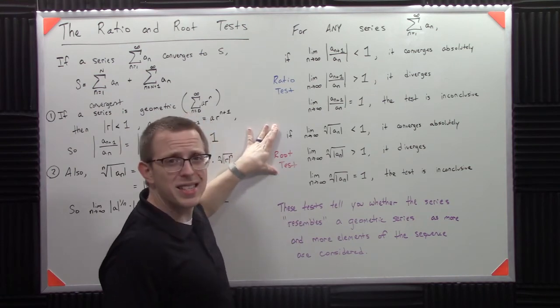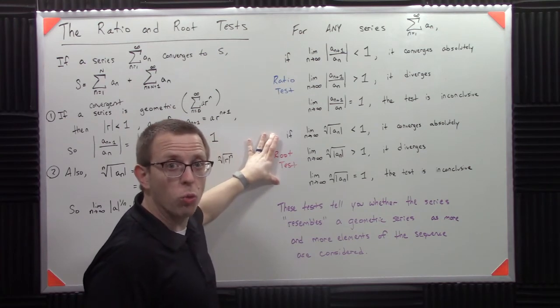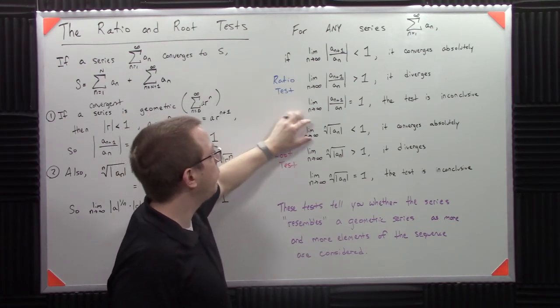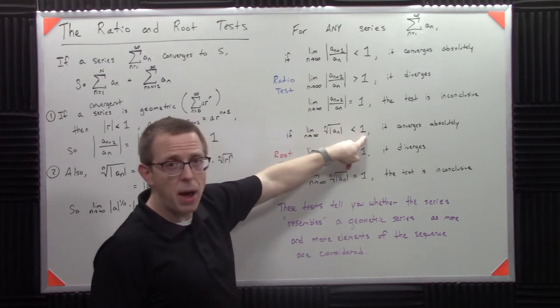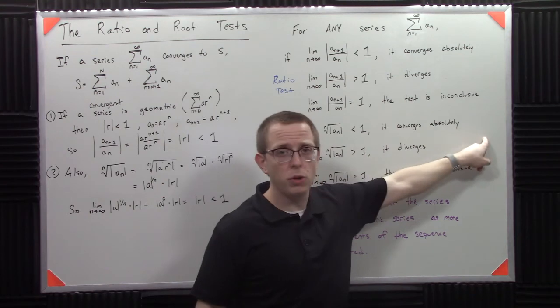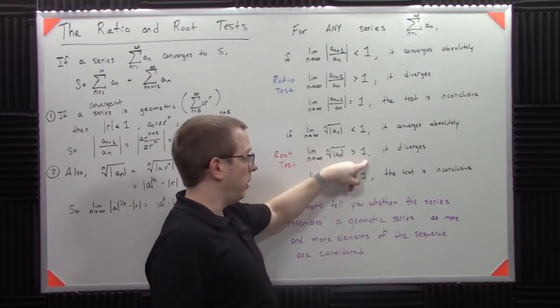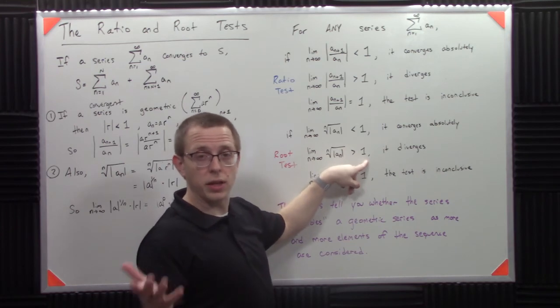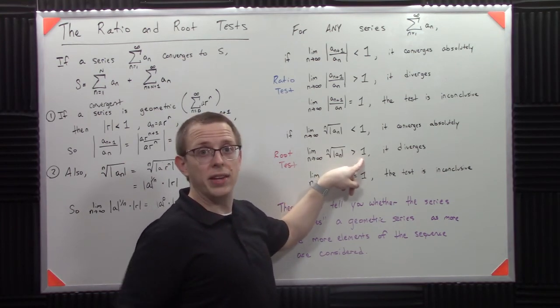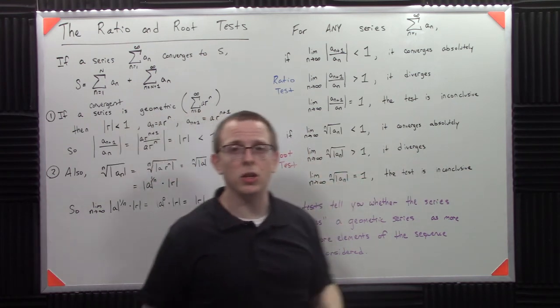The root test, I find myself not using the root test very often, but it is a very powerful tool when you need it. But it's got the same idea. It says, look, if it has the same behavior as a geometric series long term, it converges absolutely just like a geometric series. If it is greater than 1, if it resembles a geometric series but it resembles the kind that diverges, it also diverges. But if it's equal to 1, the test is inconclusive.